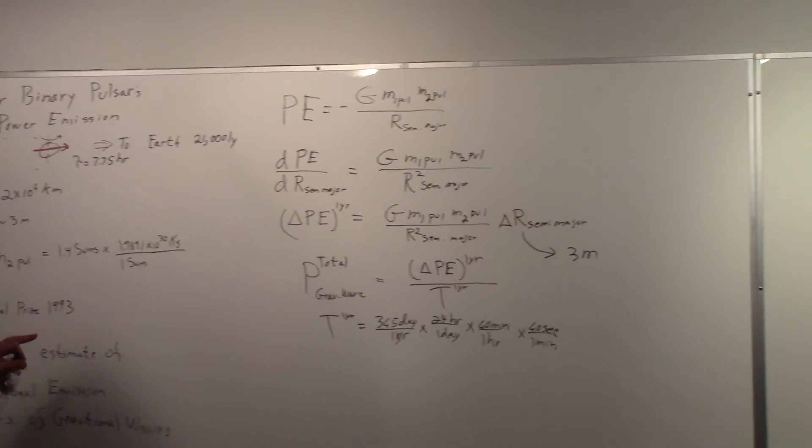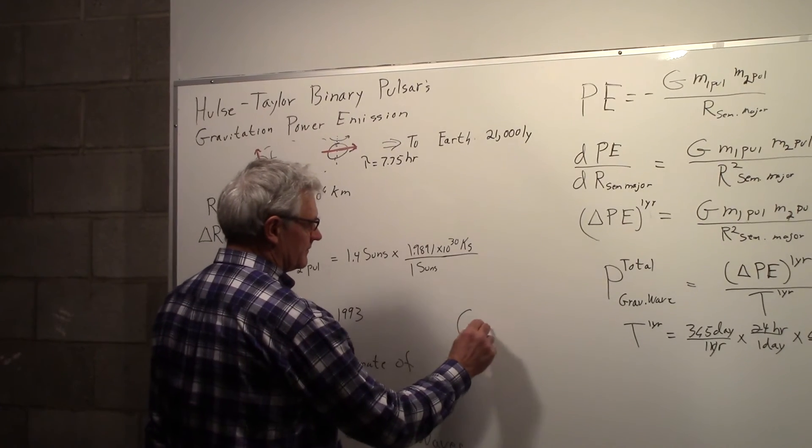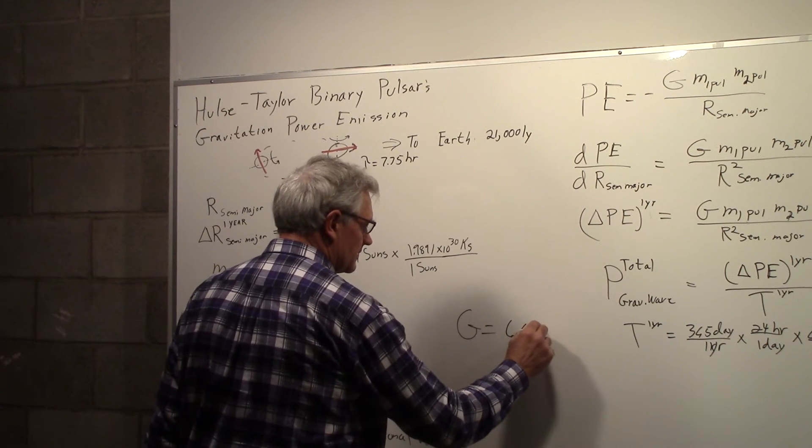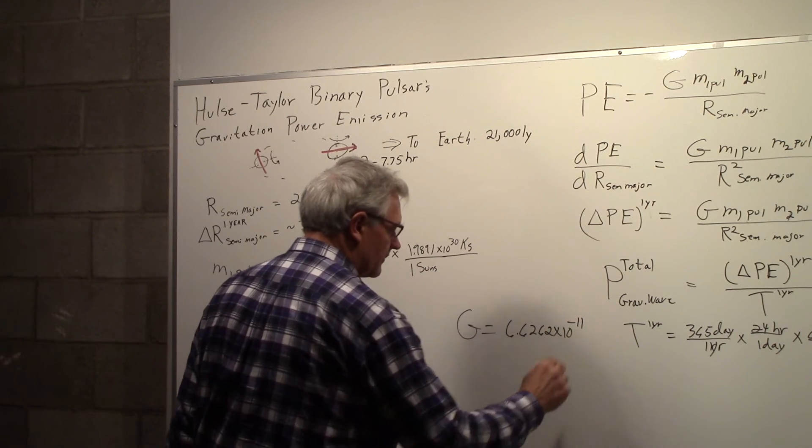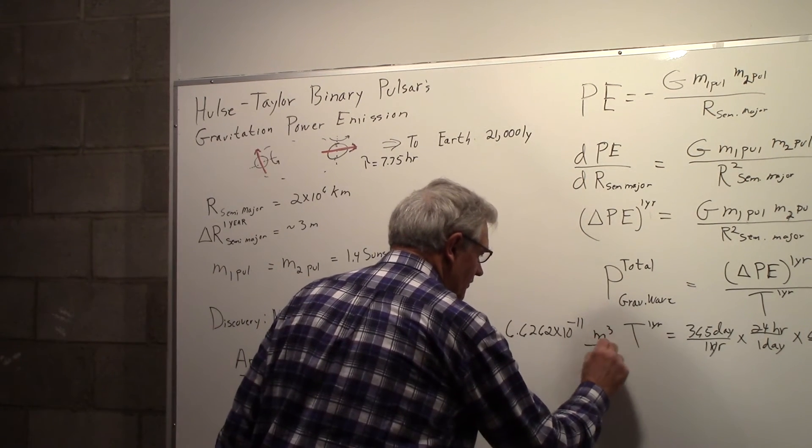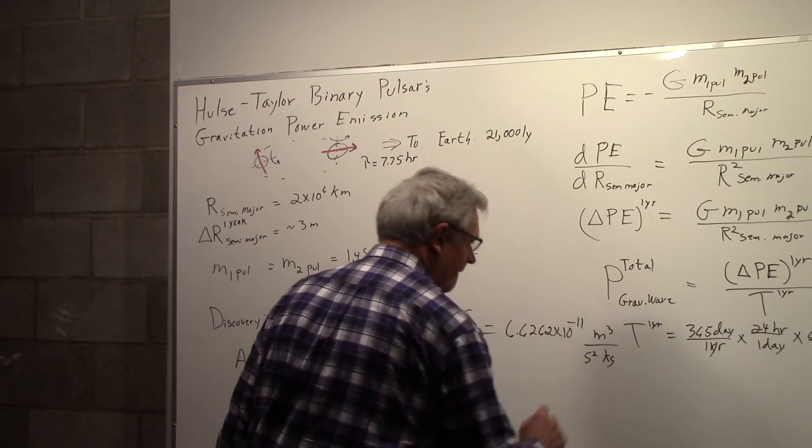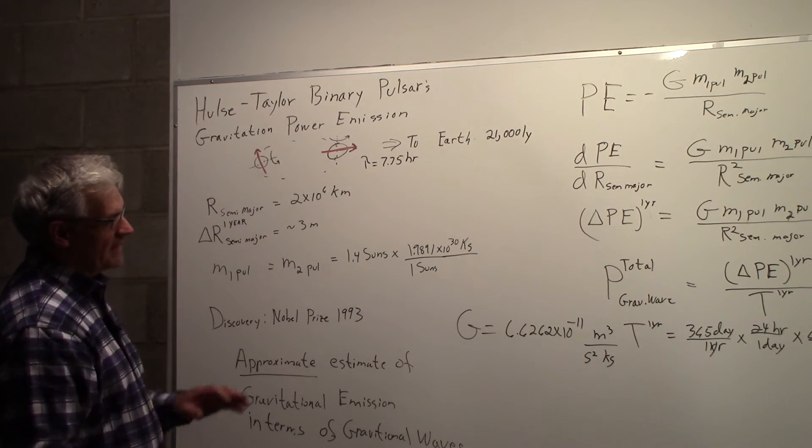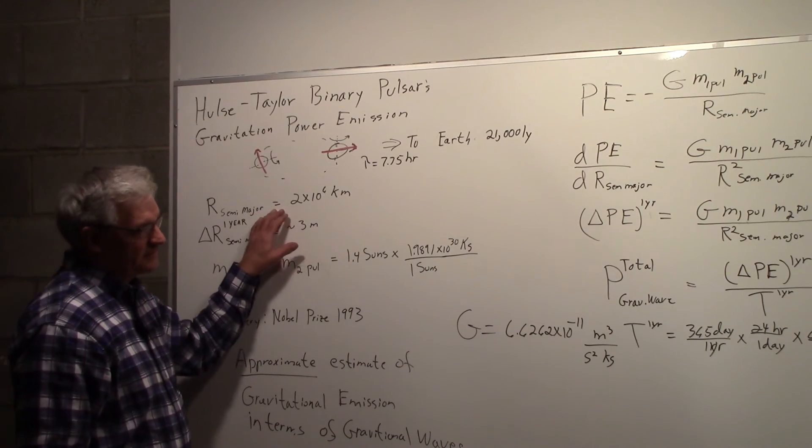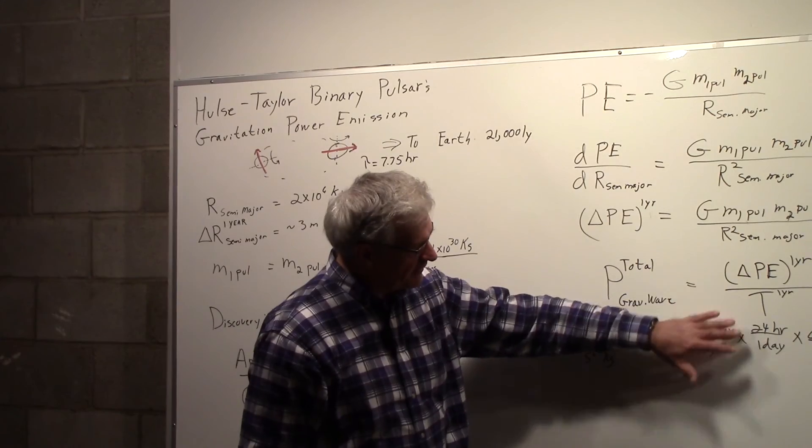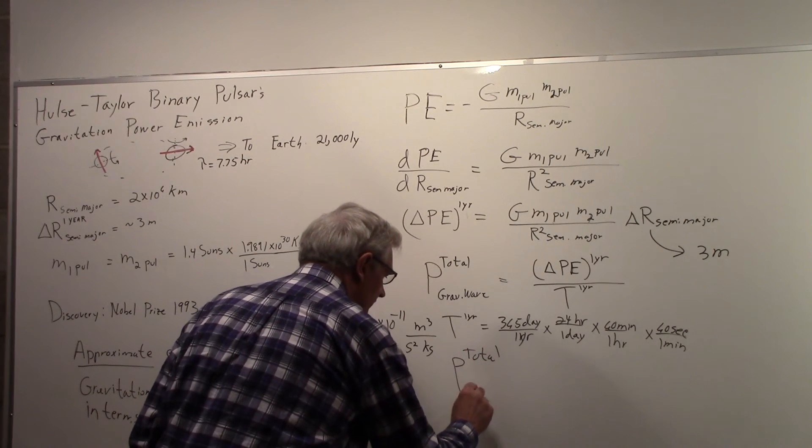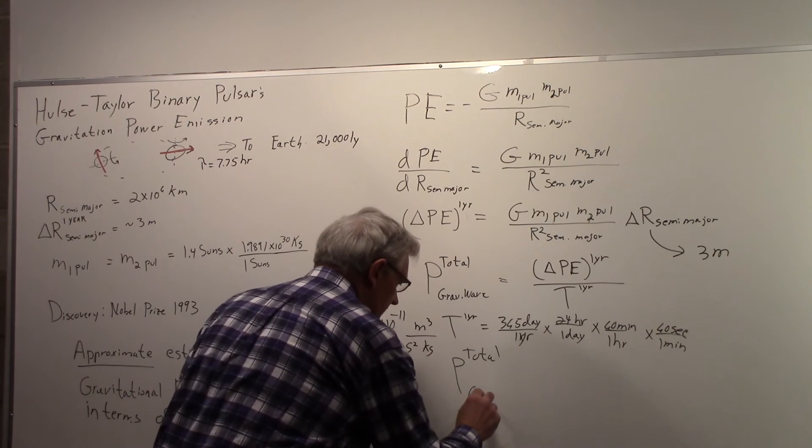And we have the masses over here. All we need is the gravitational constant. And the gravitational constant is 6.62 times 10 to the minus 11th. And the units on that are meter cubed per second squared kilogram. So if we substitute these numbers in, we have the masses. We have the gravitational constant. We have the value for the semi-major axis. We have the change in the semi-major axis. Substitute that all in here and then divide by the time, we'll find the power that we're assuming is being emitted in terms of gravitational waves.